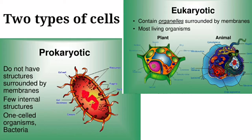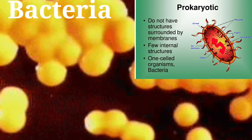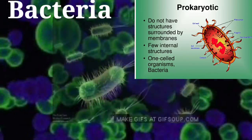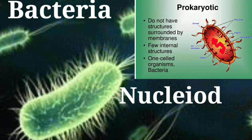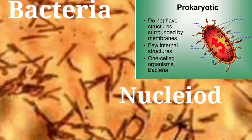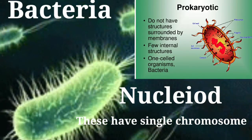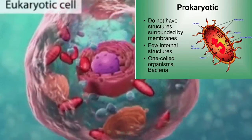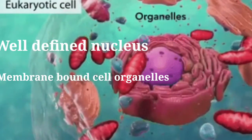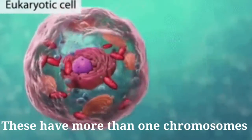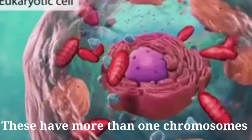Based on the nucleus, we have two types of cells: prokaryotic cells and eukaryotic cells. In some organisms like bacteria, the nuclear material is not enclosed by a nuclear membrane and membrane-bound cell organelles are absent. Such a nucleus is called a nucleoid and such cells are also known as prokaryotic cells. Such cells have a single chromosome. Cells having a well-defined nucleus and membrane-bound cell organelles are termed as eukaryotic cells. Such cells have more than one chromosome.